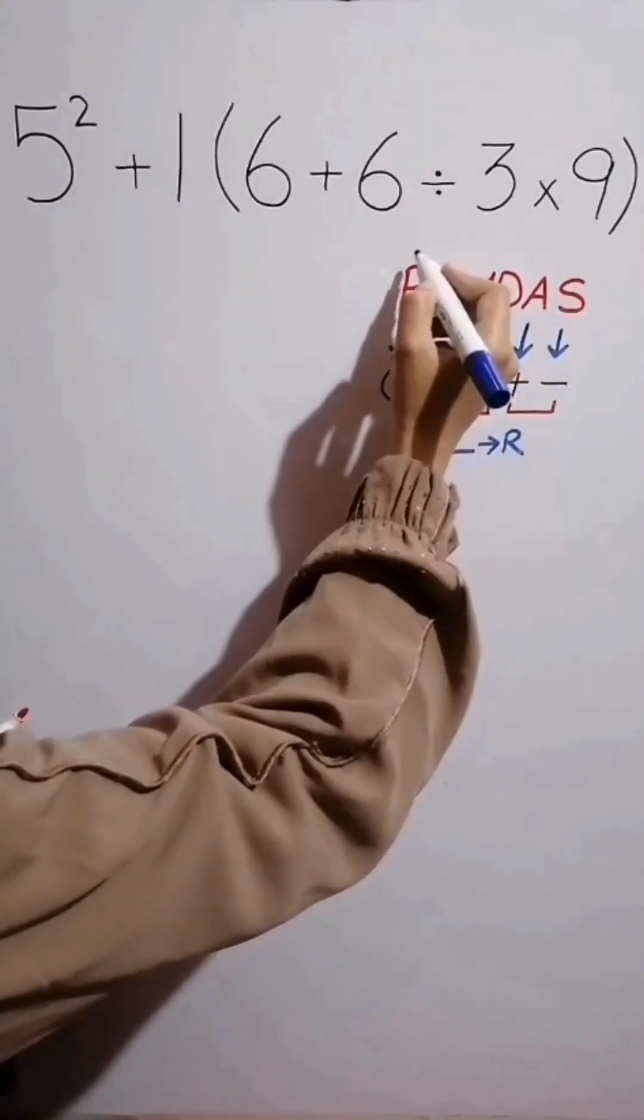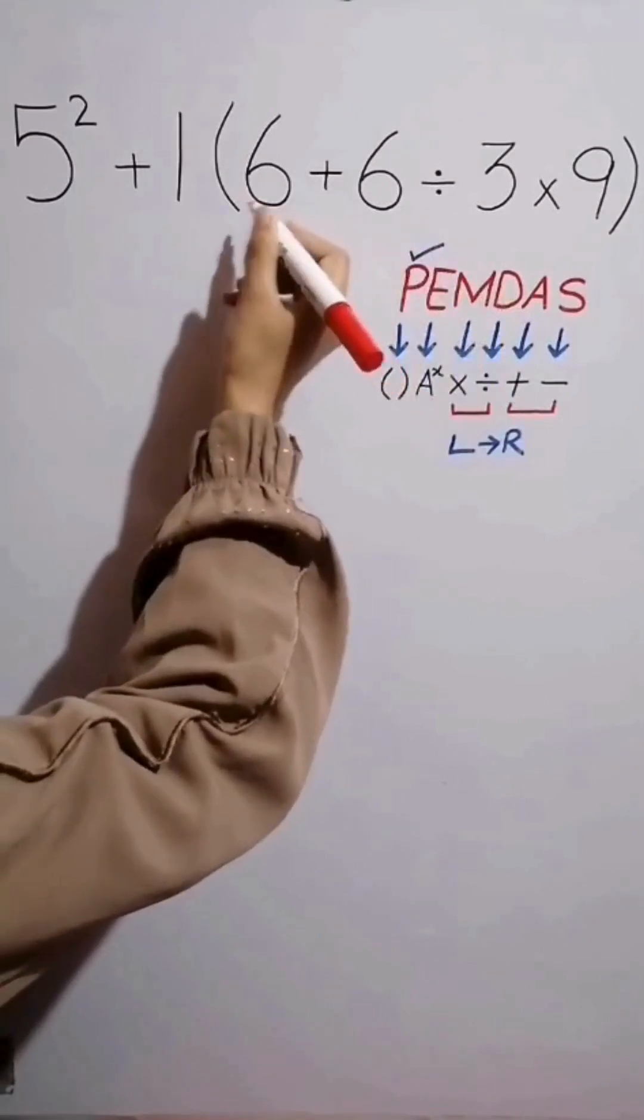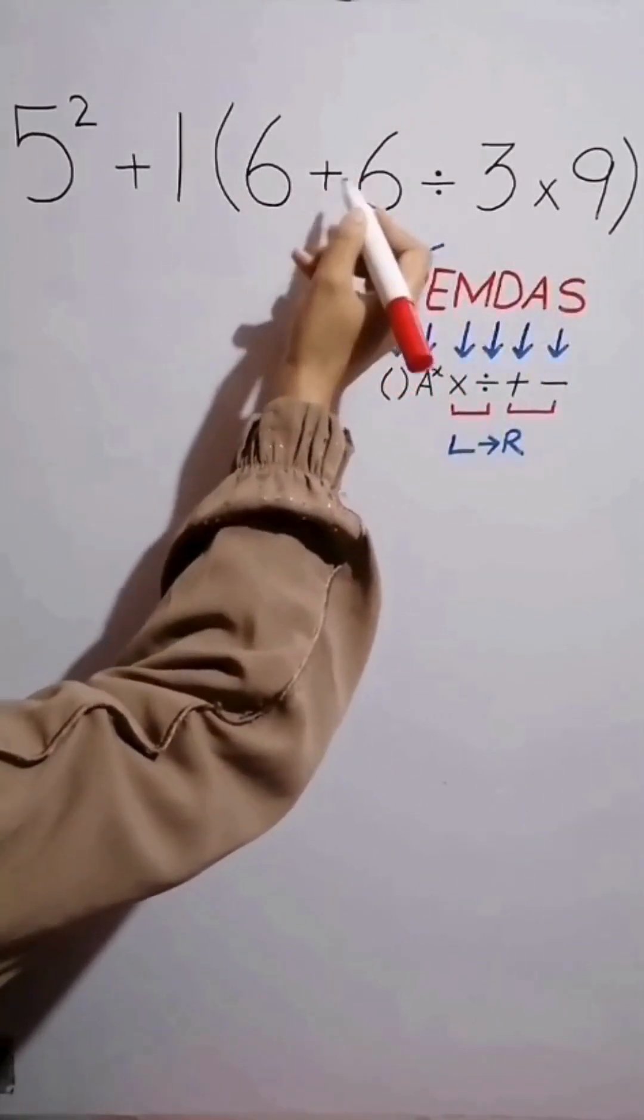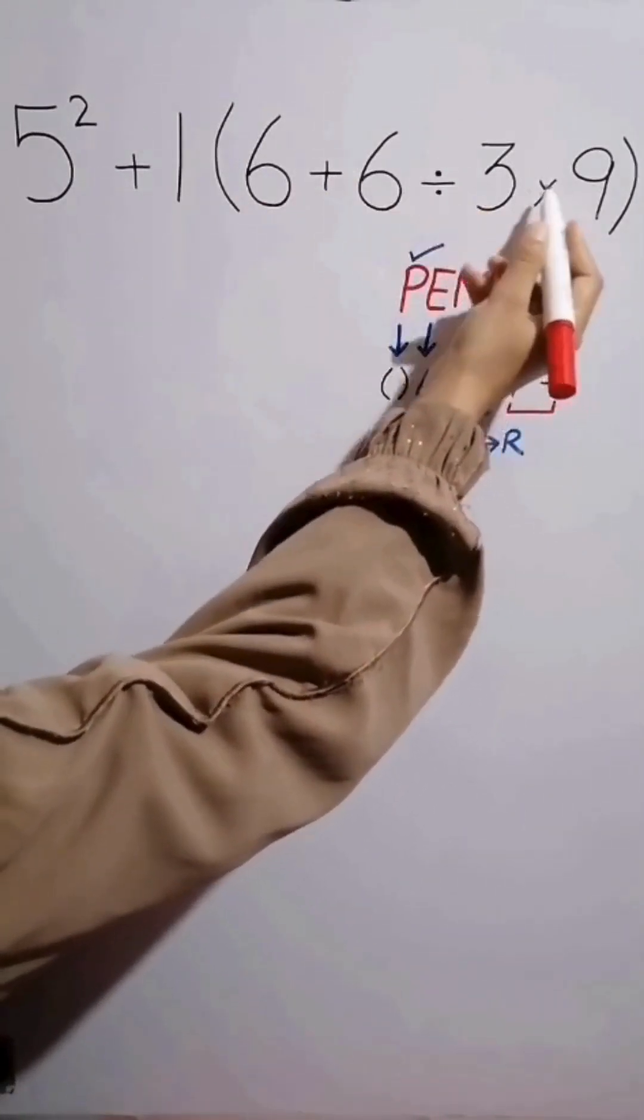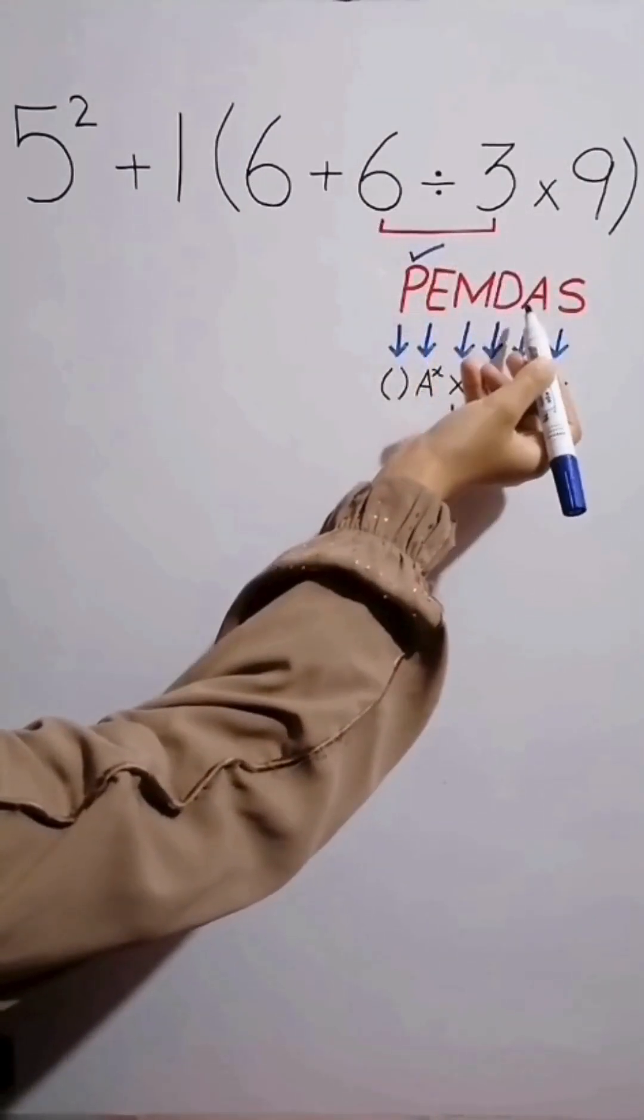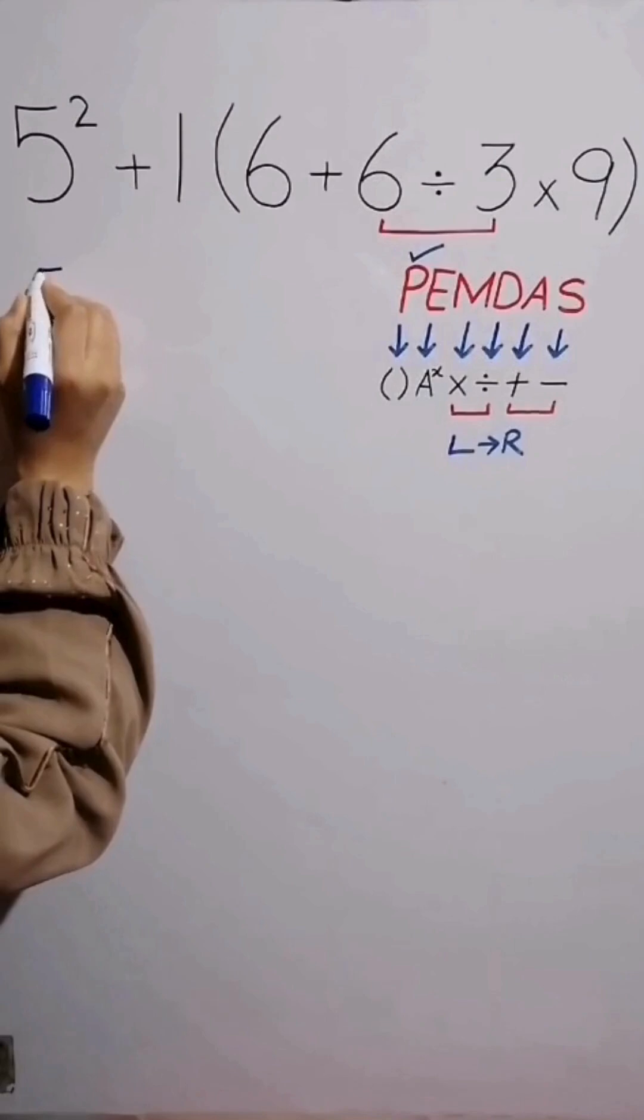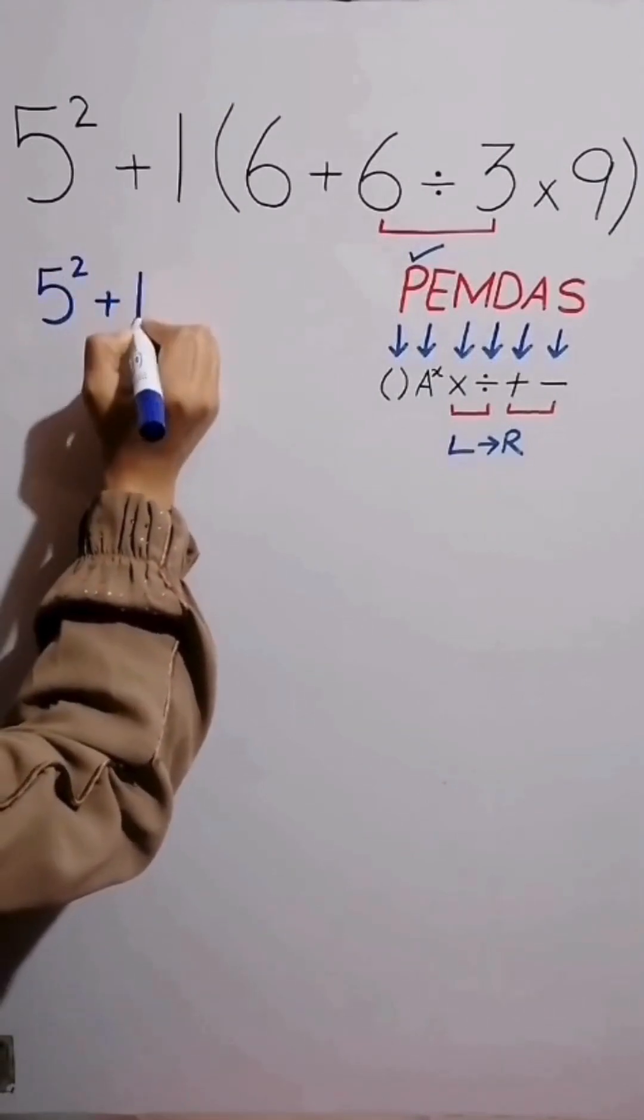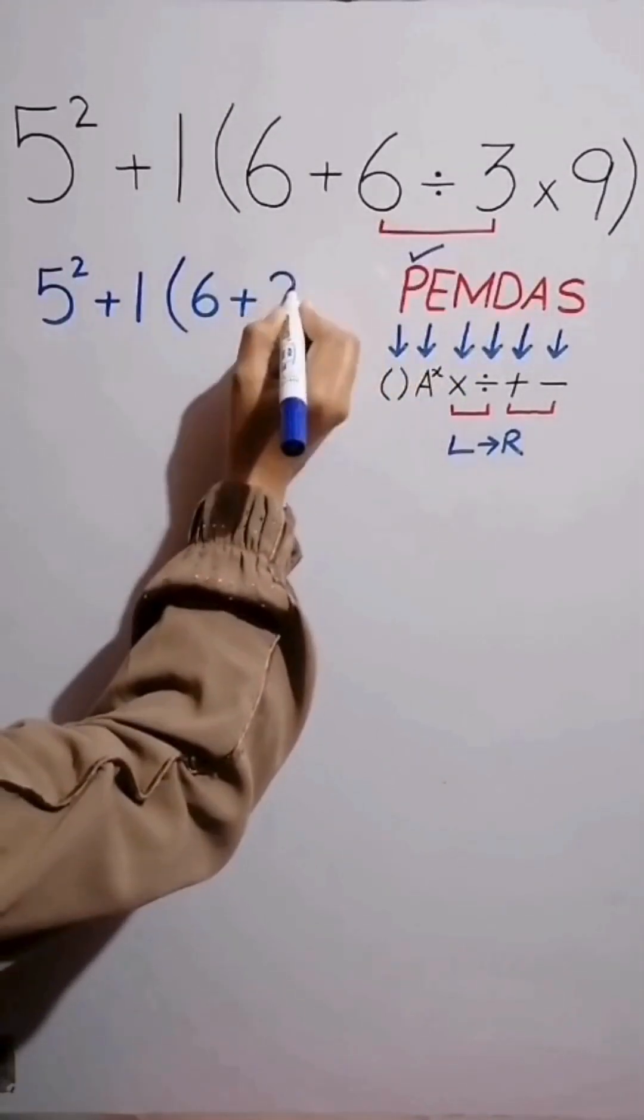In this expression, first we simplify this parenthesis. Inside these parenthesis we have addition, division, and multiplication. First we do this division because division has higher priority than addition. And simplify this expression as 6 divided by 3 equals 2.